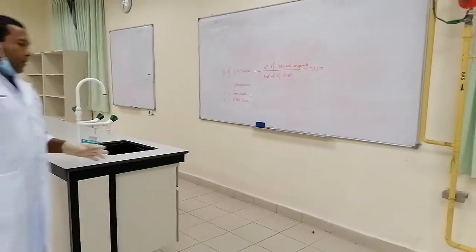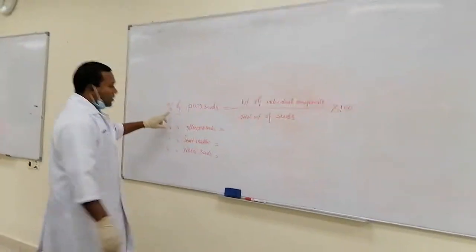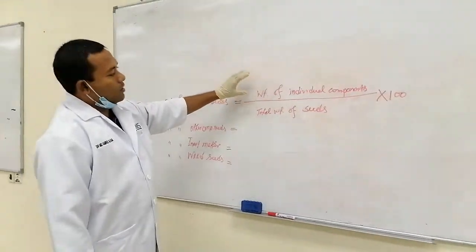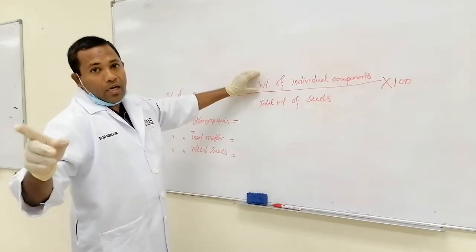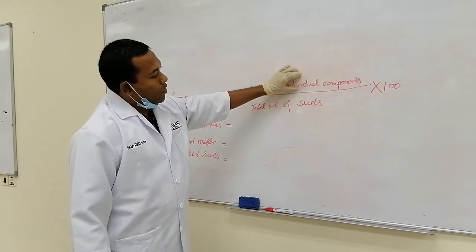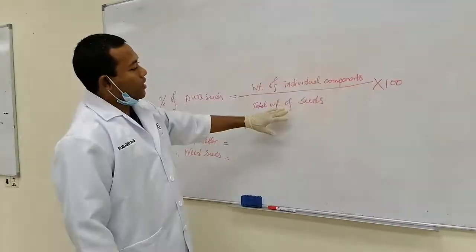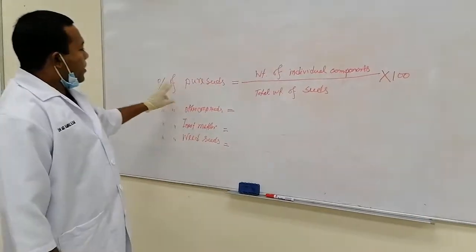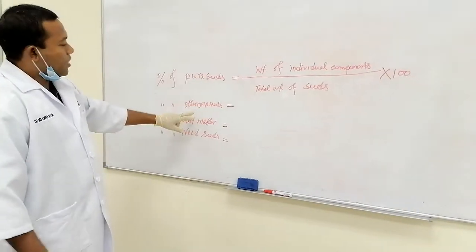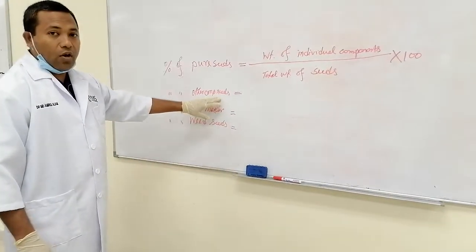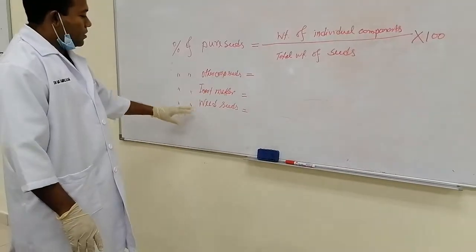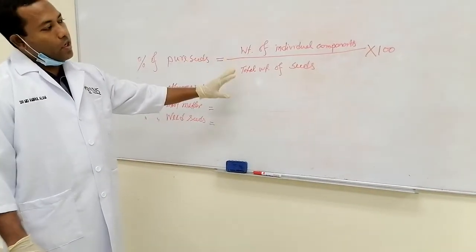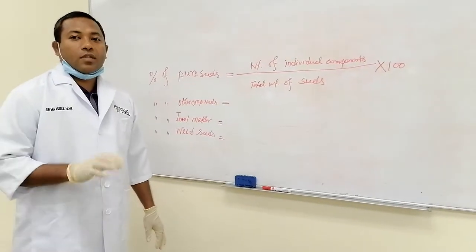How to measure the percentage of pure seeds: the percentage equals the weight of the individual component — meaning after purity analysis, the weight of the pure seed — divided by the total weight of the seed (that means 100 grams), multiplied by 100. In the same way, you have to calculate what percentage are other crops, what percentage is inert matter, and what percentage is wheat seed — using the same equation. By this way we can determine the purity percentage of the seed.